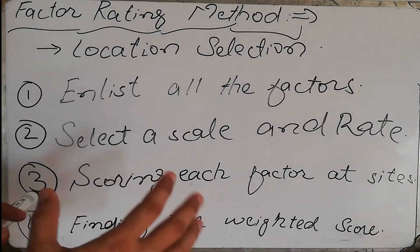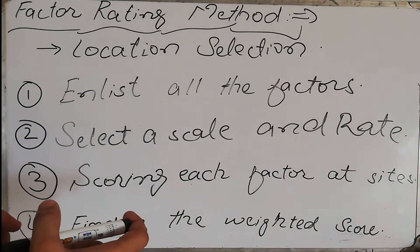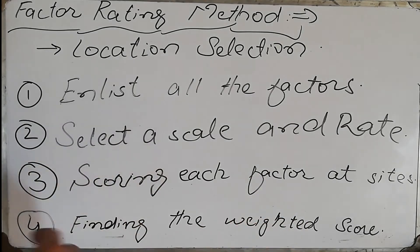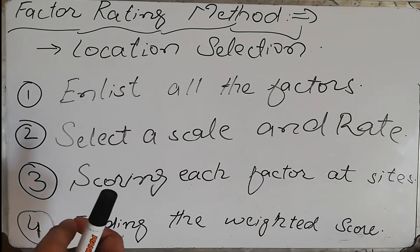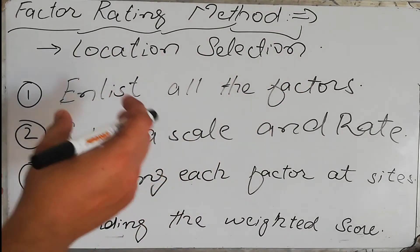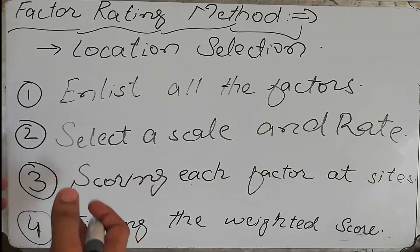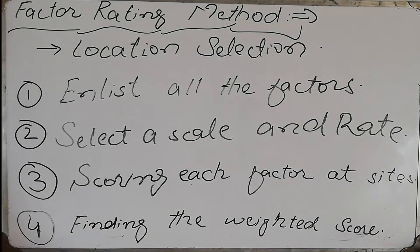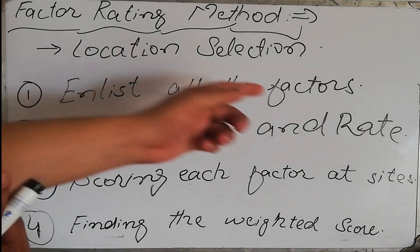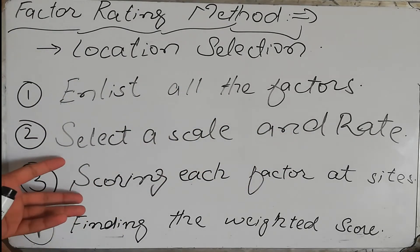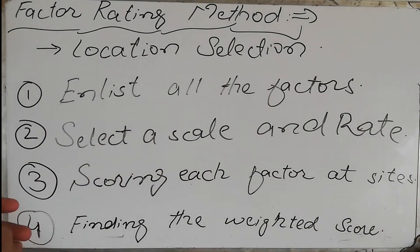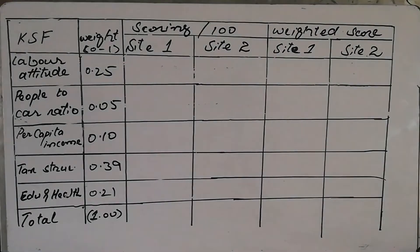The third step is scoring each factor at each site. We look at each site and provide a score for each factor, finding out what the capability of that location is for providing that certain factor. Finally, the fourth step is to find out the weighted score, which is the product of the weight given to a certain factor multiplied by the score of that factor at each location.